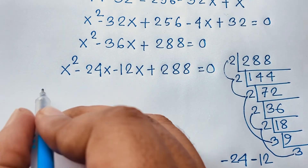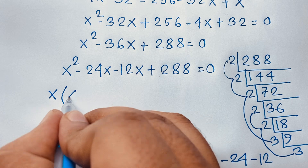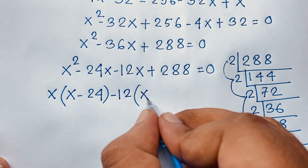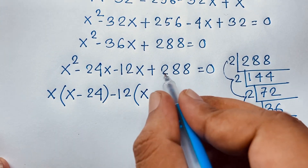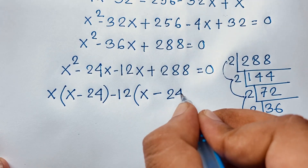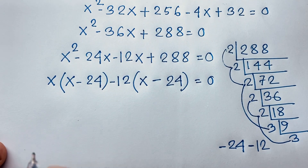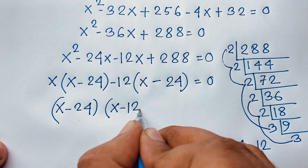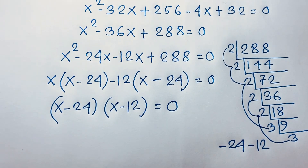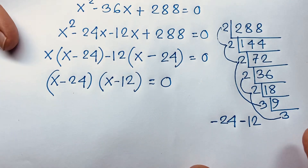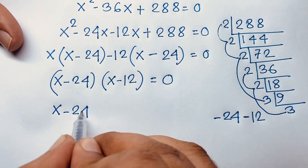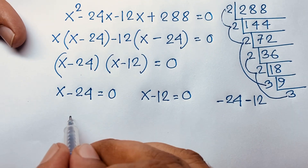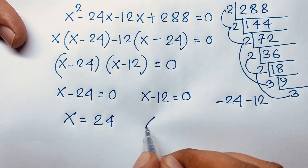You can see easily here, x is common: x squared divided by x is x, and 24x divided by x is 24. Minus 12 is common: divided gives x, and 288 divided by 12 is 24. So we find x minus 24 is equal to 0 and x minus 12 is equal to 0, giving x is equal to 24 and x is equal to 12. These are our two solutions.